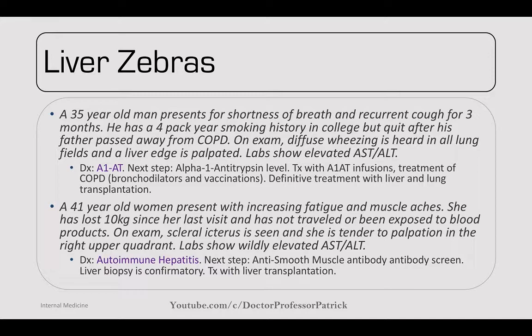A 41-year-old woman presents with increasing fatigue, muscle aches, 10 kg weight loss. No travel or blood product exposure. On exam: scleral icterus, tender right upper quadrant, wildly elevated AST and ALT. This looks like hepatitis but she has no risk factors. Diagnosis: autoimmune hepatitis. Next step: anti-smooth muscle antibody screen; liver biopsy is confirmatory. Treatment: only liver transplantation.